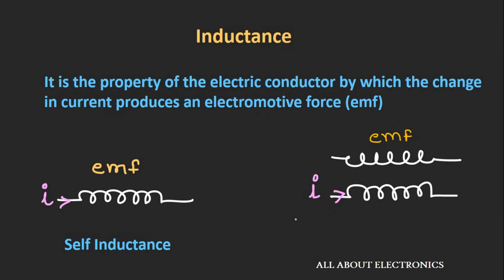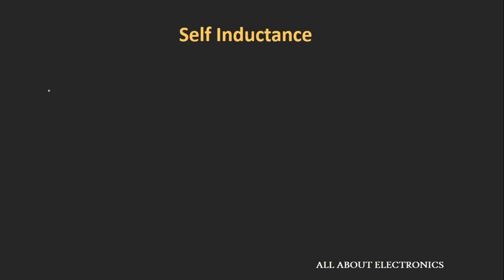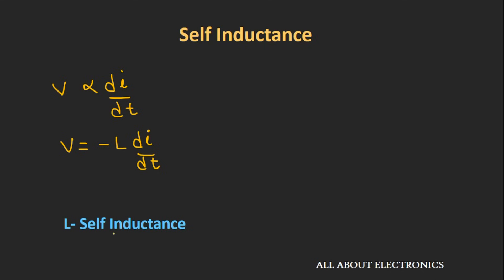If the rate of change of current produces the EMF or a voltage in a nearby coil, then that is called mutual inductance. For self inductance, the voltage or EMF that is generated is proportional to the rate of change of current. We can write V = -L di/dt, where L is the self inductance or simply inductance.